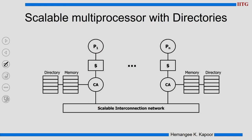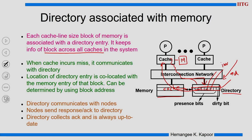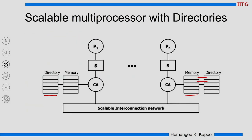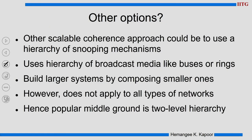In a scalable multiprocessor, memory modules are distributed across nodes and every such distributed memory module has an associated directory structure. In this picture we had a centralized memory with a limited number of nodes; here you have an even larger system where every node has a slice of the memory.